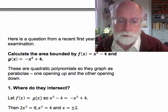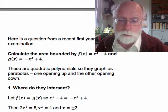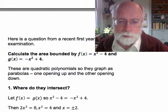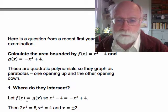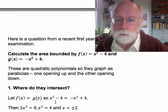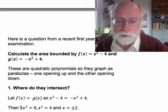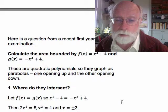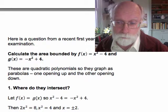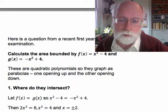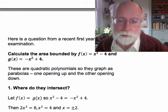We ask where do they intersect? Well, intersections are found by letting the two functions equal each other. So when is f of x equal to g of x? Well, when x squared minus 4 equals minus x squared plus 4. The algebra takes us to 2x squared equals 8. Divide by 2, x squared equals 4. Take the square root, x equals plus or minus 2. So these two curves intersect at two points and the points are when x is minus 2 and when x is plus 2.